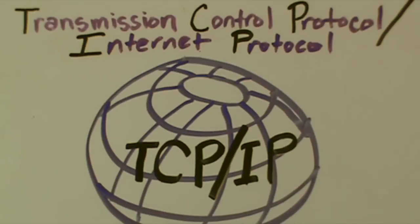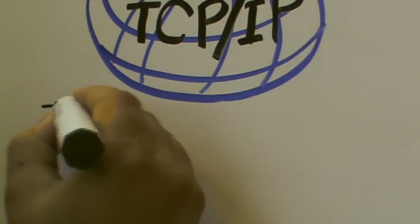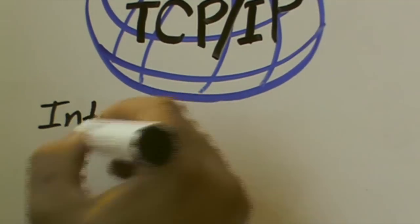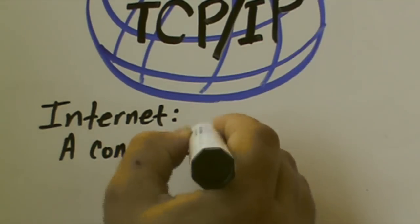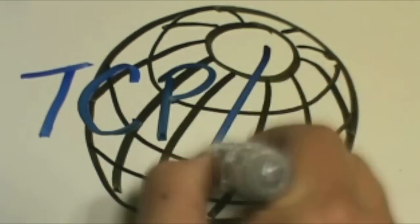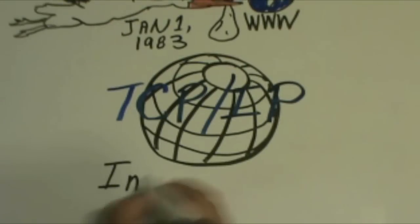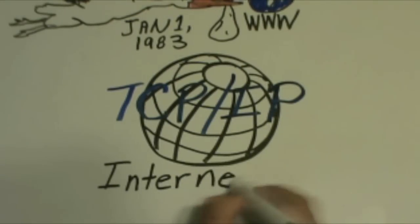Internet technology protocols were developed, commonly known as TCP/IP or Transmission Control Protocol and Internet Protocol. This led to one of the first definitions of the Internet, being a connected set of networks. ARPANET and the Defense Data Network officially changed to the TCP/IP standard on January 1, 1983, hence the birth of the Internet.